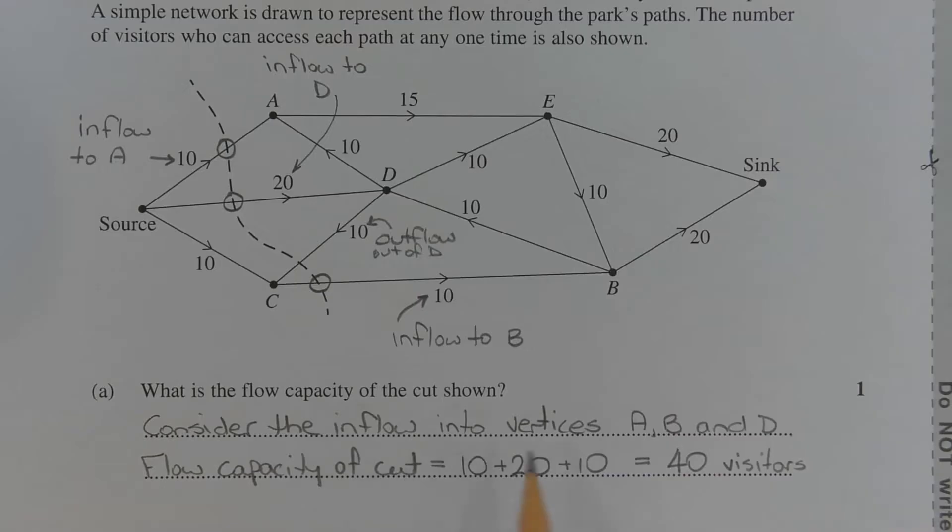So considering the inflow into those vertices, the flow capacity of the cut is 10 plus 20 plus 10, which is 40 visitors.